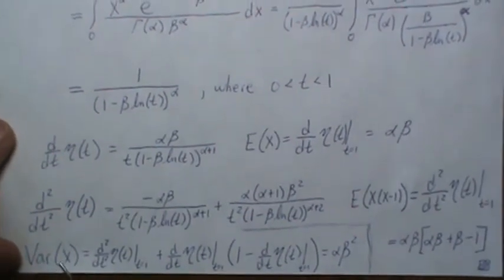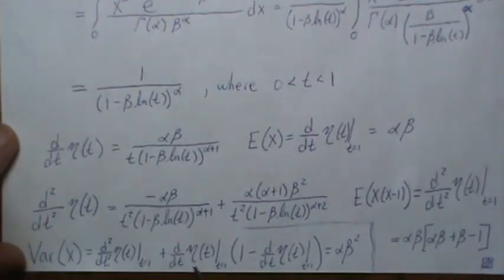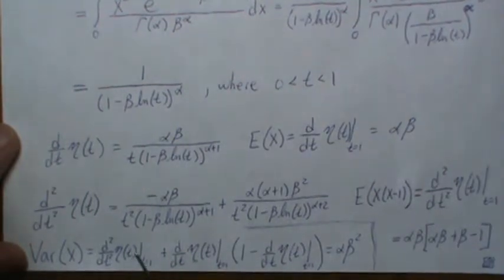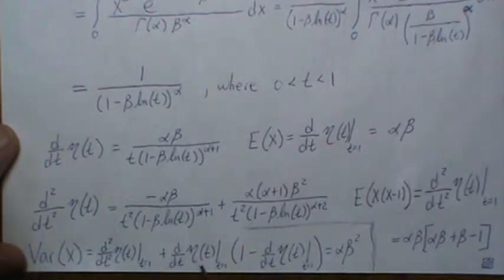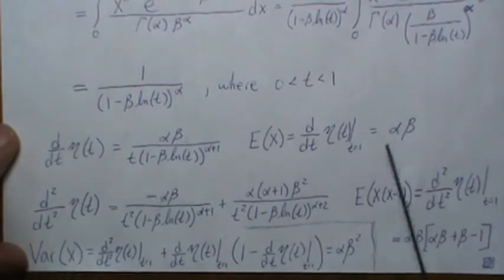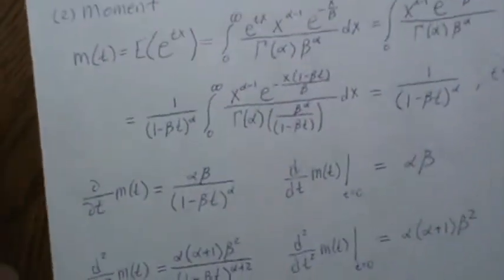So to find the variance is the second factorial moment plus the first factorial moment times one minus the first factorial moment. And when you plug in the numbers here, you get alpha beta squared, which is the variance of a gamma distribution.